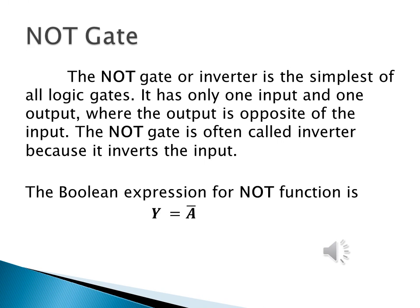The NOT gate, or inverter, is one of the simplest of all the logic gates — it has only one input and one output, where the output is opposite to that of the input. The NOT gate is also called the inverter because it inverts the input. The boolean expression for the NOT gate is given by Y equals A-bar, where the bar above the input A represents the inversion.